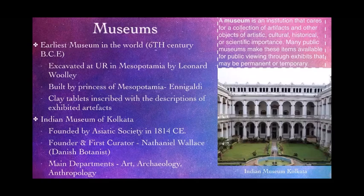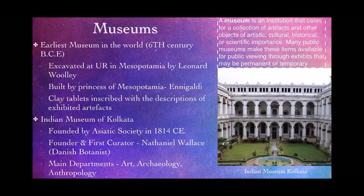The Indian Museum of Kolkata was founded by the Asiatic Society in 1814 CE. Its founder and first curator was Nathaniel Wallace. The museum has three main departments: arts, archaeology, and anthropology. Other departments include conservation, publication, photography, exhibition presentation, model making, training, library, and security.